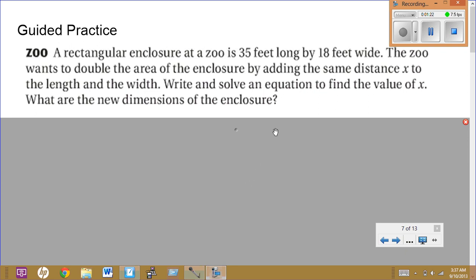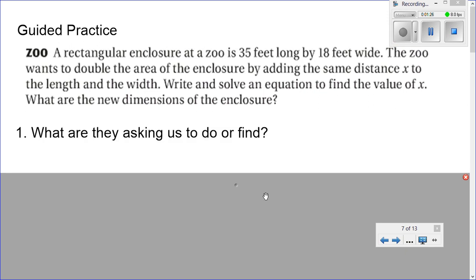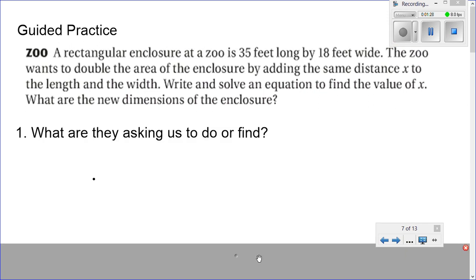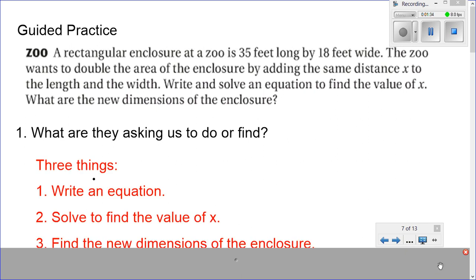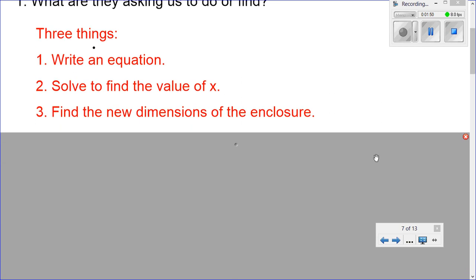So, as we start our word problems, the first thing we need to figure out is, what are they asking us to find? In this particular problem, we are looking for three things. They first want us to write an equation. They want us to solve and find the value of x. And they want us to find the new dimensions of the enclosure. So, go ahead and write those down.